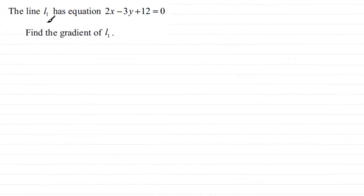Now this part of the question, we're given the line l1 has the equation 2x minus 3y plus 12 equals 0. We've got to find the gradient of the line l1.